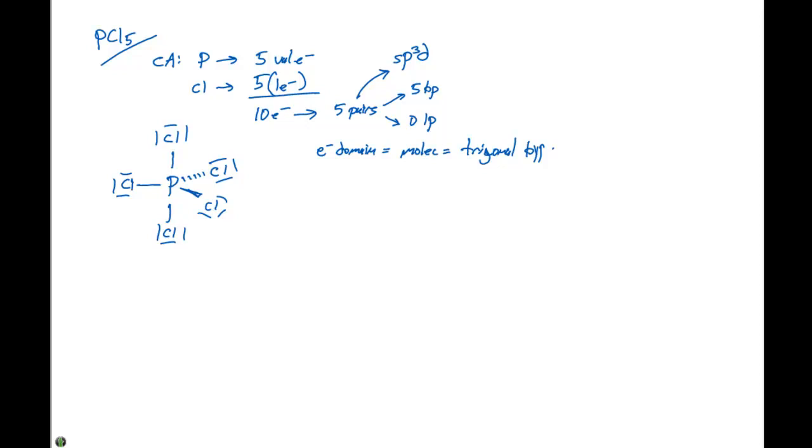But the phosphorus is going to have an expanded octet. And if we look at this particular molecule, since all five ligands are the same, we're going to have five vectors pulling in equal and opposite directions. So this will be a non-polar molecule.